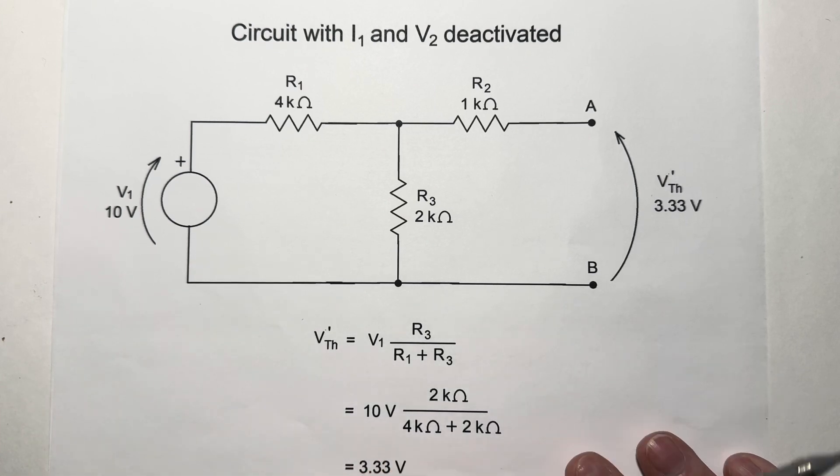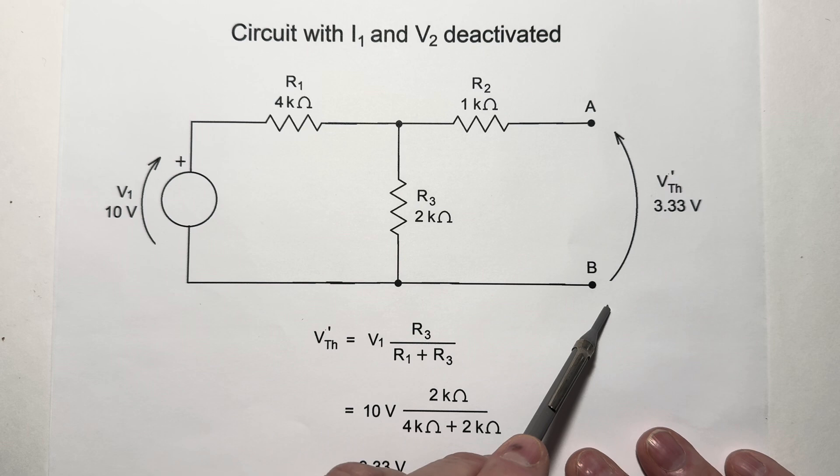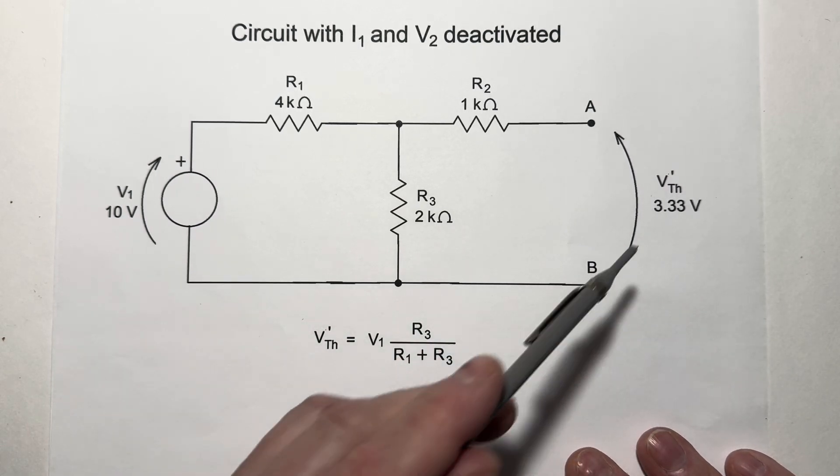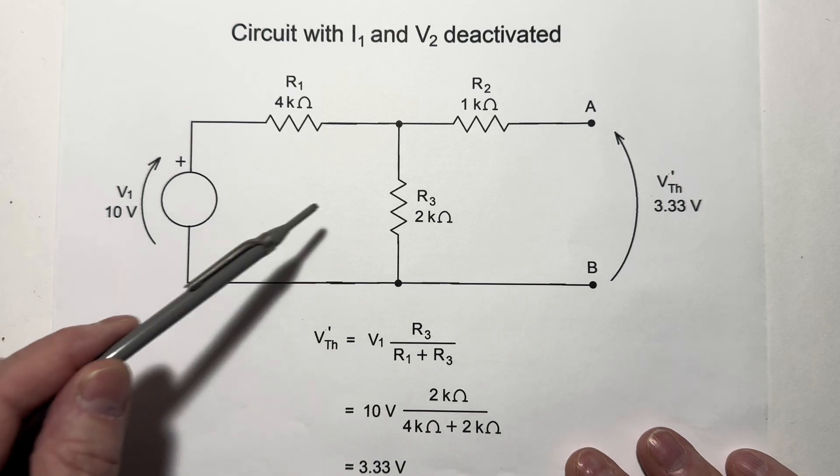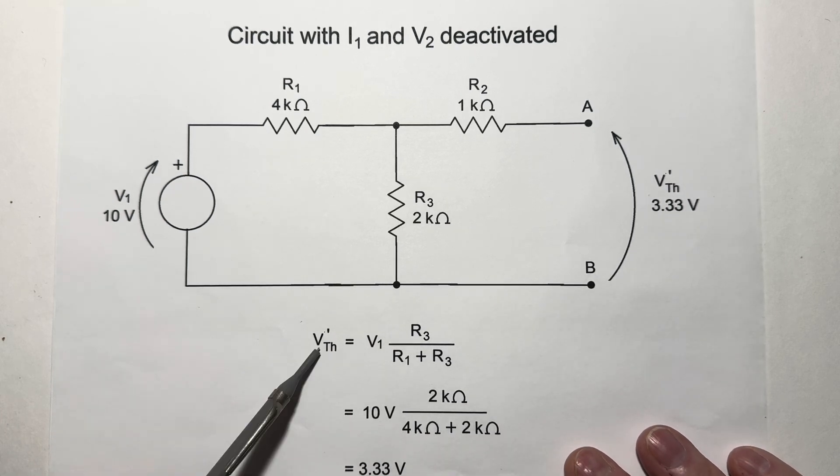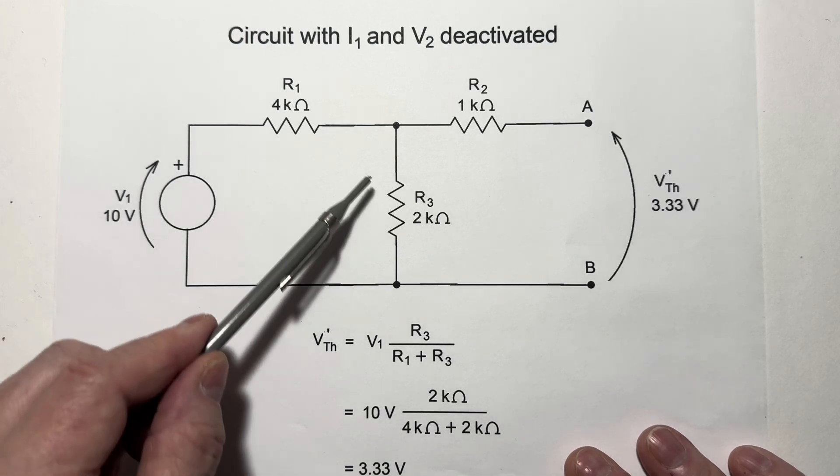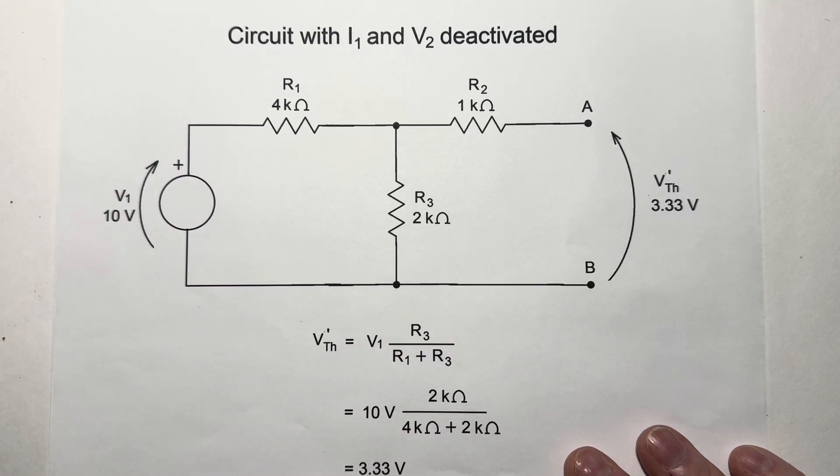When we deactivate those sources, this is the equivalent circuit we get. We have 10 volts applied to this network. R2 has no effect on the output voltage. I'm calling that V'th, the first component of the Thevenin voltage. This has no effect because there's no current flow through it. So we've just got a voltage divider with R1 and R3. Applying the voltage divider equation, we come up with V'th equals 3.33 volts. So with 10 volts applied here, we've got 3.33 dropped across R3. That is our first Thevenin component.